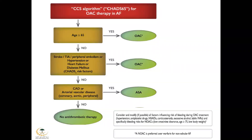This is the Canadian guidelines algorithm for oral anticoagulation therapy related to atrial fibrillation. If the patient is age above 65, regardless of CHADS score, according to Canadian guidelines, the patient should receive oral anticoagulation, with NOACs preferred over warfarin for non-valvular atrial fibrillation. If the patient is less than 65, you look at the CHADS score — if any score or CHADS of one, go to the oral anticoagulation arm. If no CHA₂DS₂-VASc risk factors but history of coronary or arteriovascular disease, give aspirin. If no risk factors and no vascular disease, no antithrombotic therapy is needed.